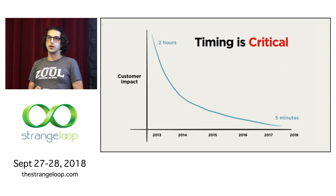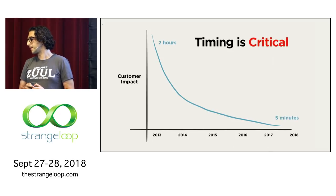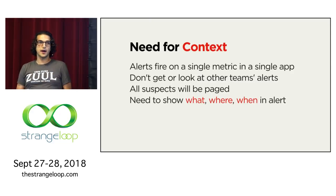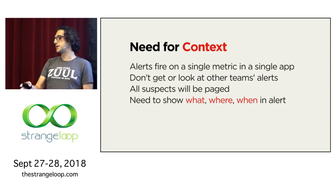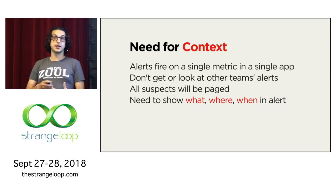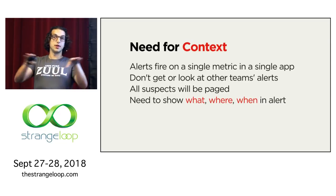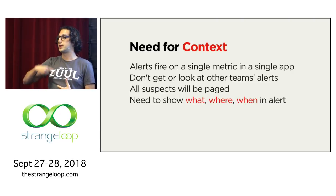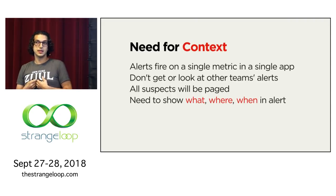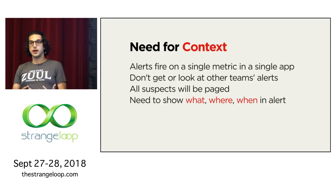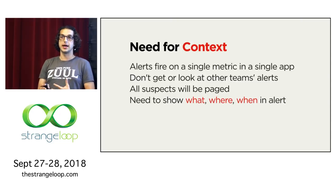We also need context. Alerts fire on a single metric for a single app set up by that specific team, and they don't get to look at other teams' alerts. Typically when an SRE sees a huge outage, they'll page all the suspects — everyone that could potentially be involved — which means if you're the front door like us, we get paged all the time. We needed to show the what, the where, and the when in the alert so operators could orient themselves and figure out who needs to be paged.